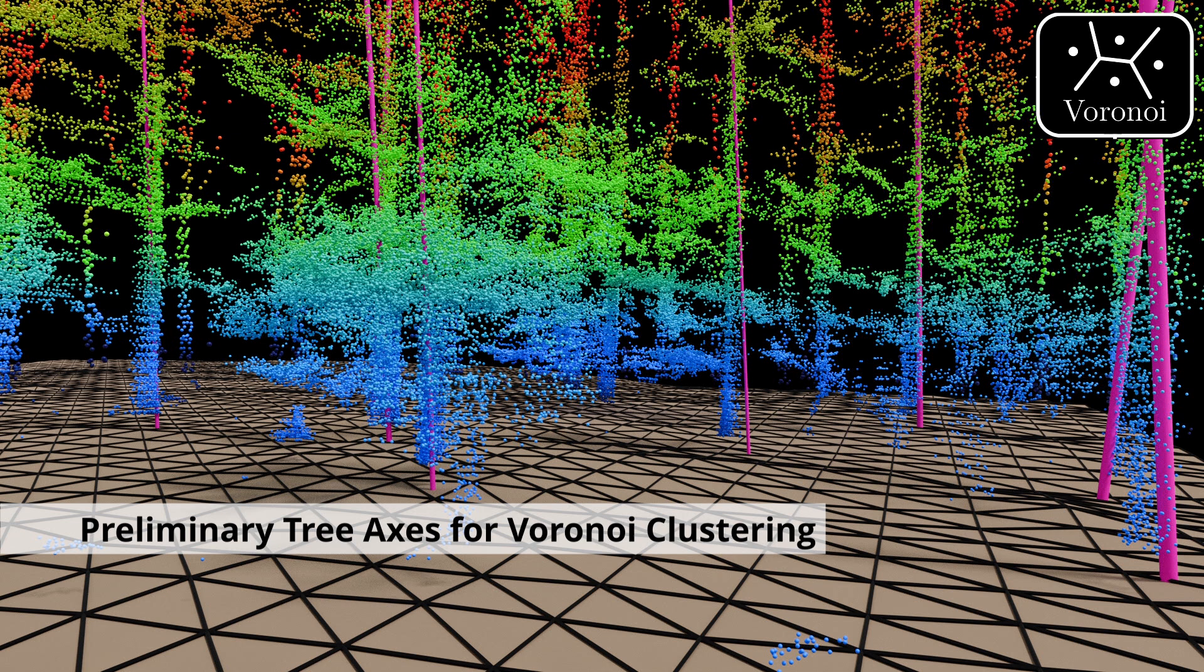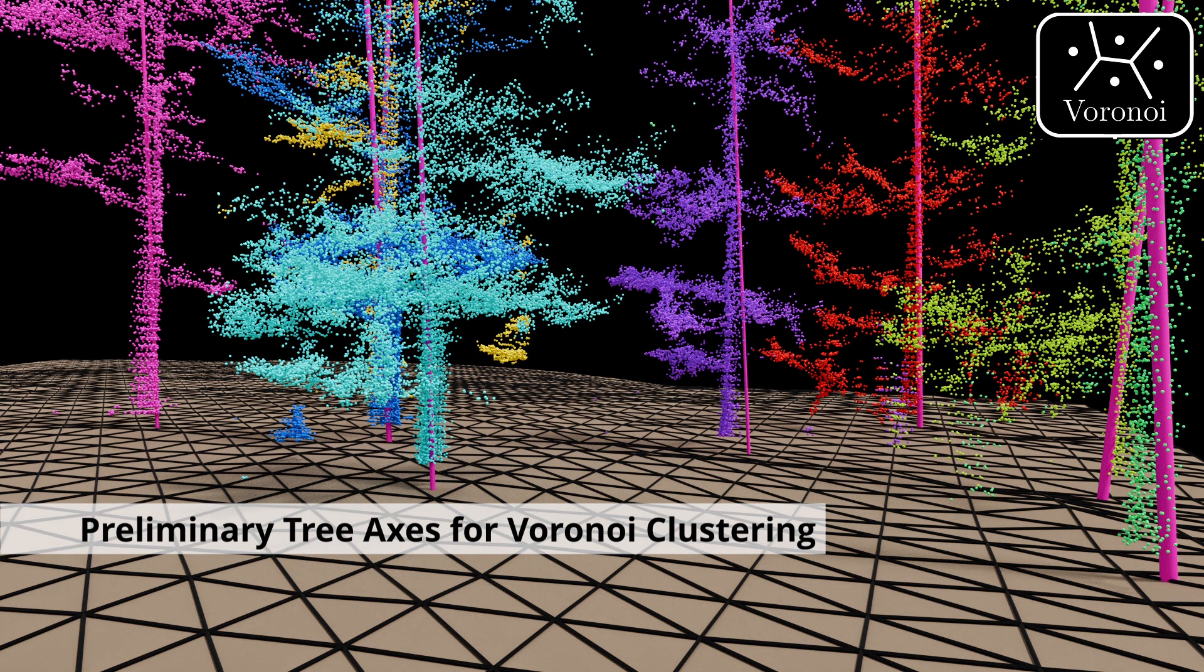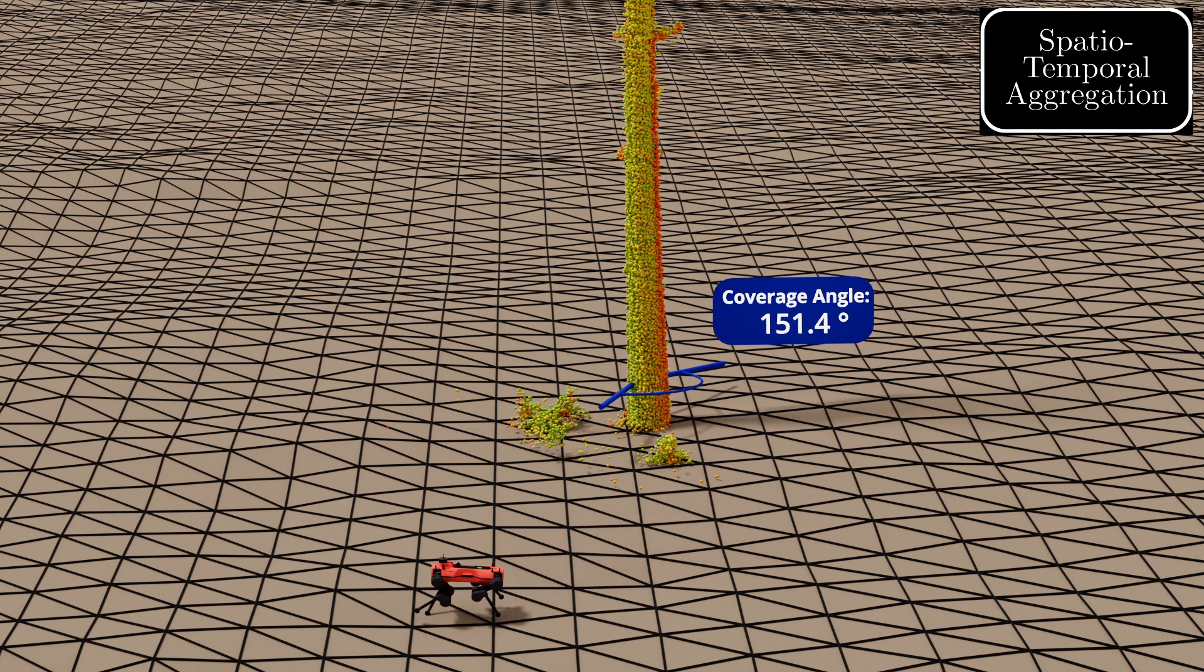With these cylinders as preliminary tree axes, we cluster the full point cloud following the Voronoi paradigm. Over the course of several payloads, we merge clusters at the same location into tree instances. We measure the coverage angle for every tree instance, and only once it indicates that enough data has been accumulated, we initiate reconstruction.